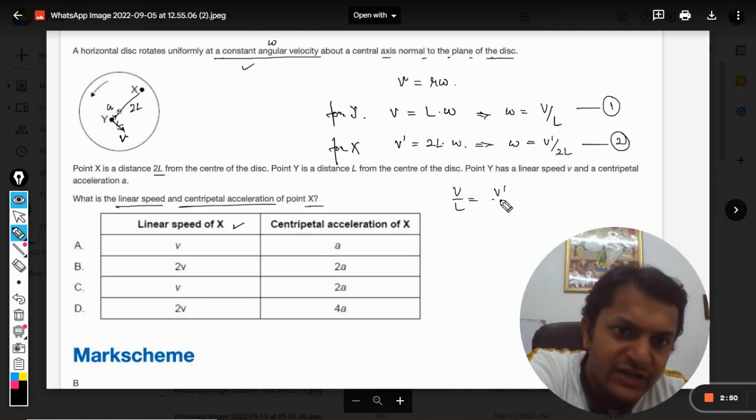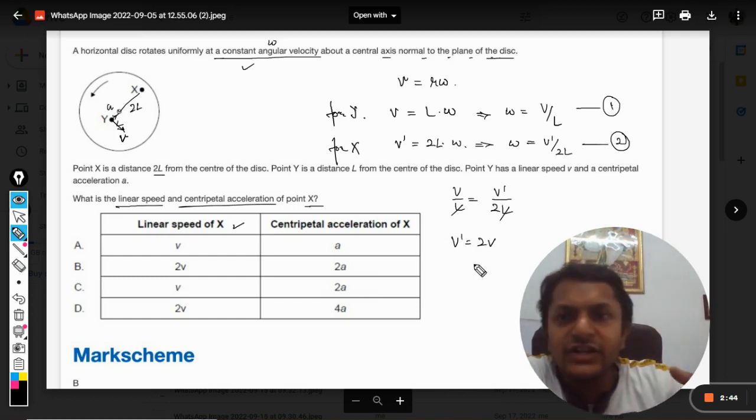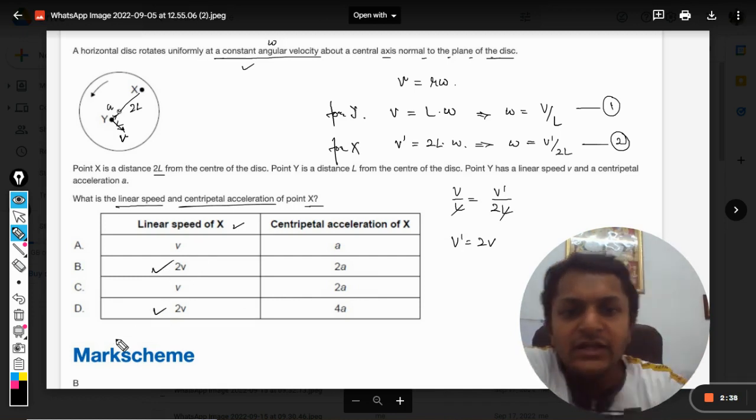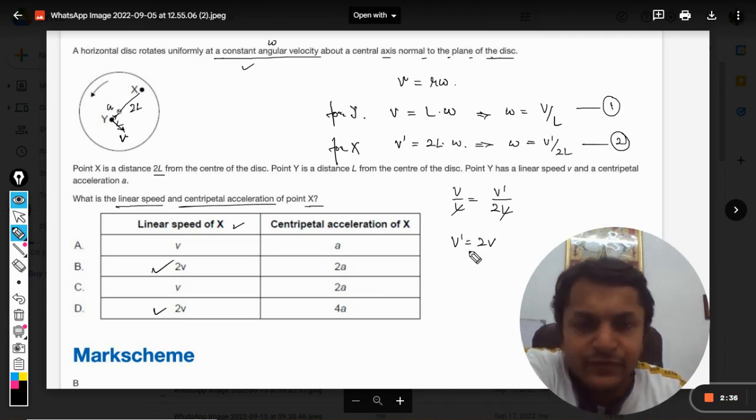So v dash will be double the velocity of Y. So either B or D should be our answer. V dash will be equal to 2v. That's the first part of the question.